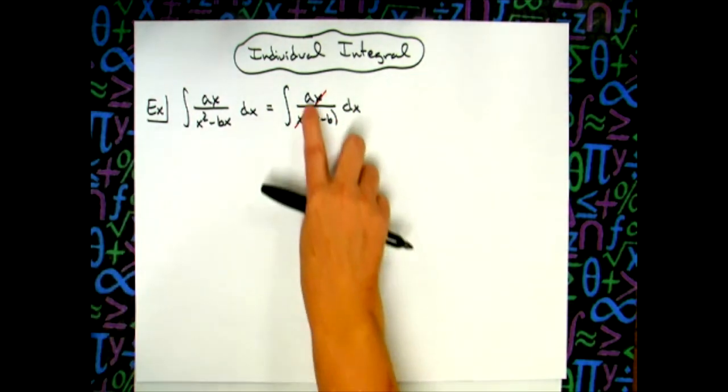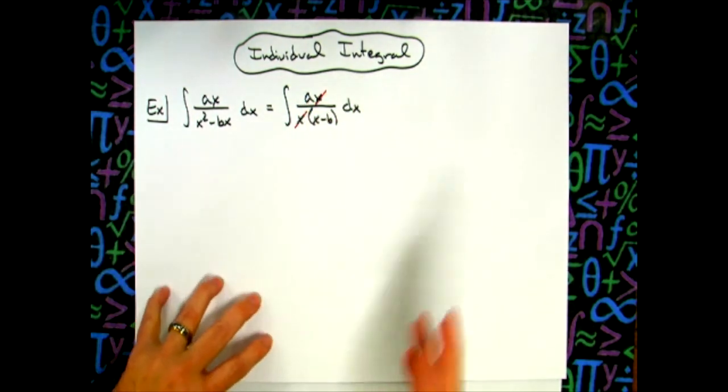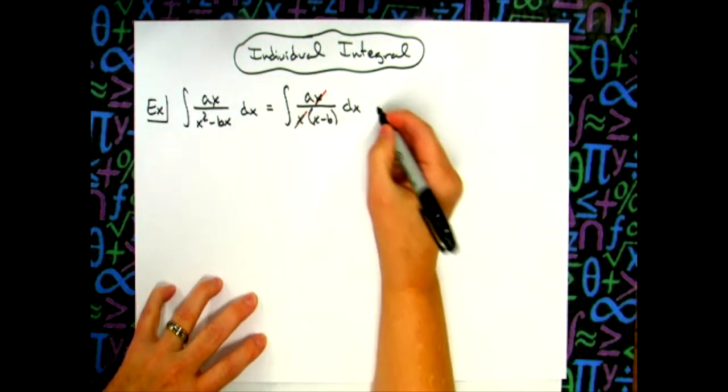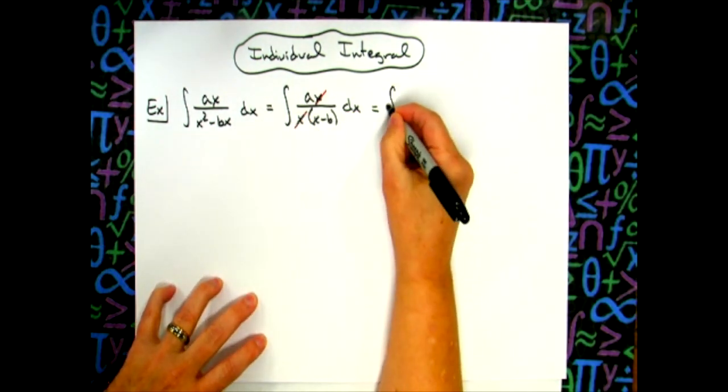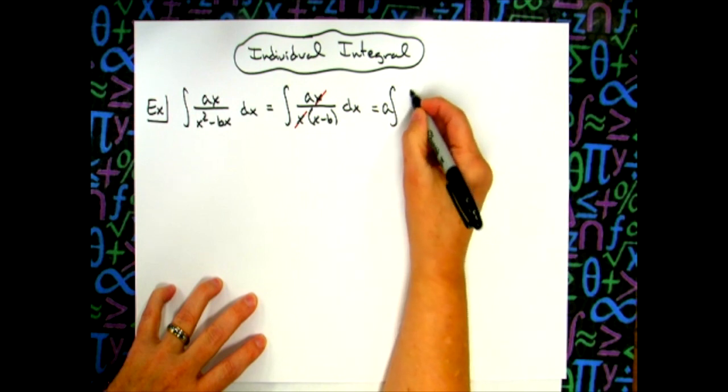Now, keeping in mind that a and b are constants—they're going to be numbers—that means I can pull that a out in front. So I'll have the integral with a pulled out in front, and I'll have one over x minus b, dx.